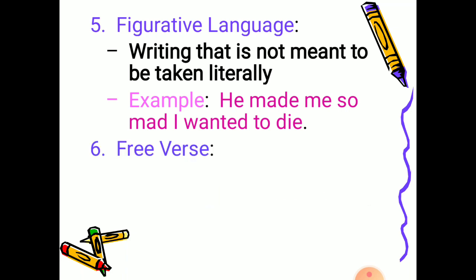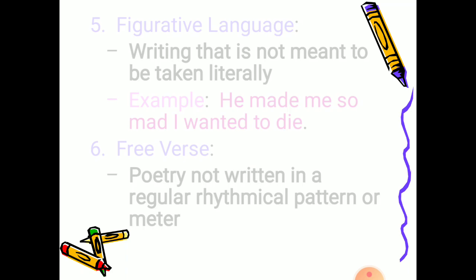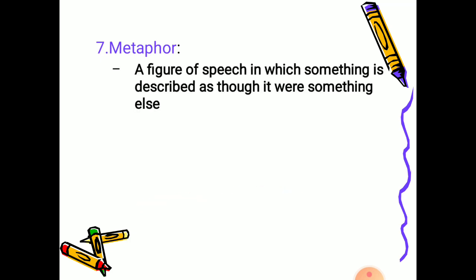Next is free verse — poetry which is not written in a regular rhythmic pattern or meter. Then is metaphor. What is a metaphor? It is a figure of speech in which something is described as though it were something else — a hidden comparison between two things.